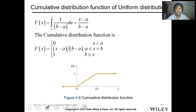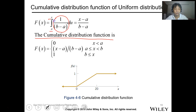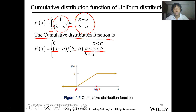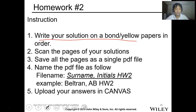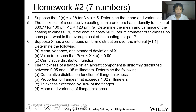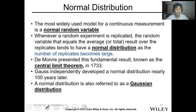For the cumulative distribution function, it's the same approach as the discrete case, but you integrate from a to x of f(x). The result is (x − a) over (b − a), which is a linear function from a to b. You have a homework assignment — write your solution on bond or yellow paper, scan the page. There are seven problems for the continuous distribution, so we'll end here.